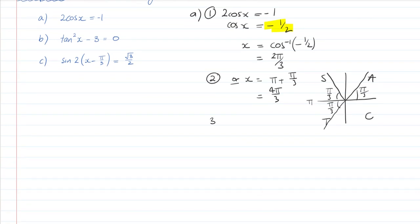So there's step one and step two. We've got our two streams of solutions. Step three is to give our general solution. Our general solution is x equals 2π/3 plus or minus 2πn, or 4π/3 plus or minus 2πn. And this is for all n that are integers. So there we have our general solutions for question a.